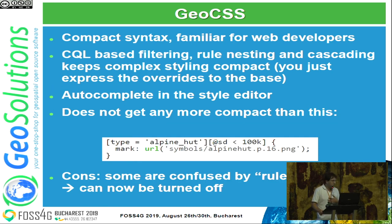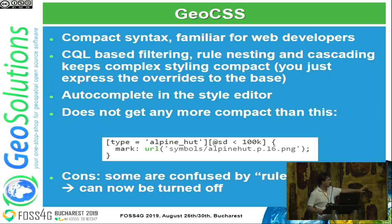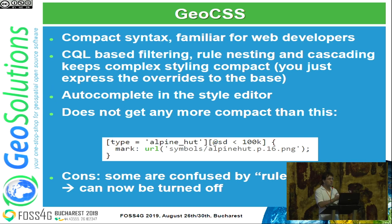This is GeoCSS, which is the one I like personally. It has a compact syntax familiar to web developers, a very compact filtering syntax using CQL, and autocomplete in the style editor. The whole equivalent style is just three lines: type equals Alpine Hat, scale denominator less than 100,000, and the PNG reference. I don't think it gets any more compact or expressive. However, it has a dark side — cascading style sheets are based on cascading rules that override other rules based on specificity, which many people find complex. So we added a way to turn that off.